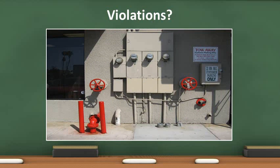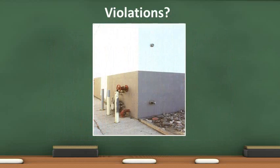And what are the violations in this photo? The FDC is missing caps. There is no sign for area covered by the valves or the FDC, and the chains and breakaway locks are missing. And what violations do we have here? Look on the wall and on the ground above and below the FDC. The fire alarm bell cover is on the ground and the caps are missing from the FDC.